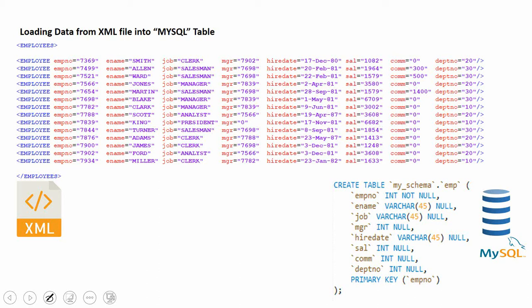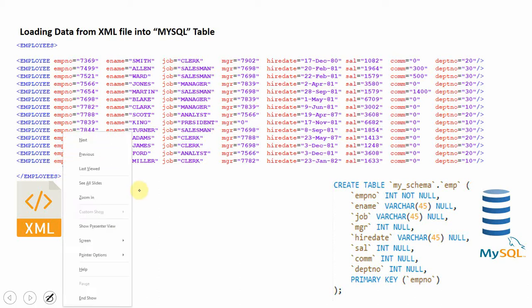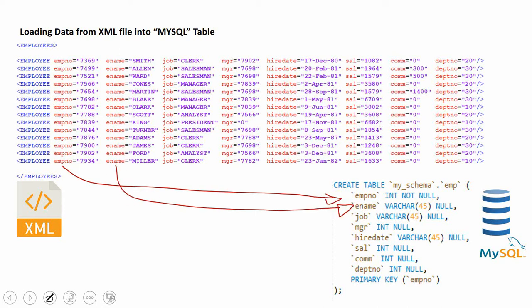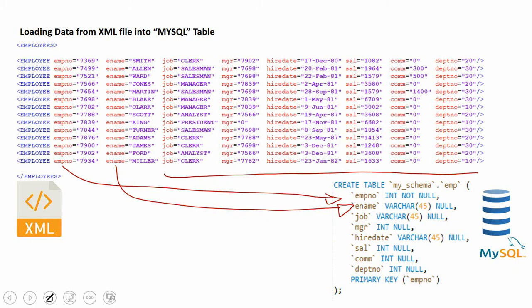Here we are going to read the information from the attribute column into the respective column name of the table. For example, employee name maps to 'ename', which is a varchar column — the same as we saw in the previous slide. The rest of the information will be stored into the remaining columns.